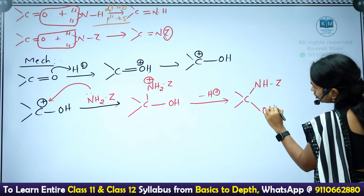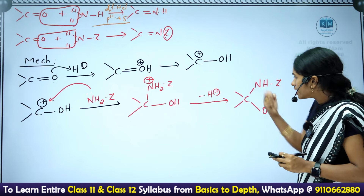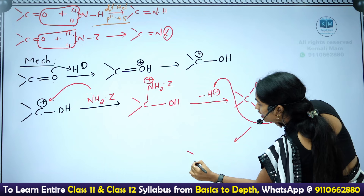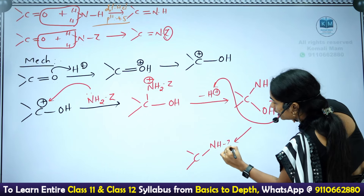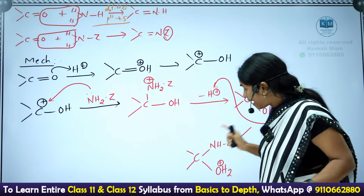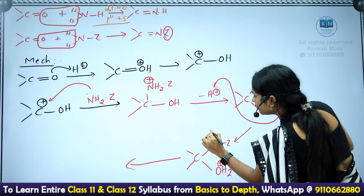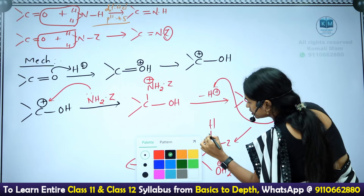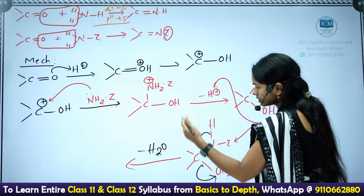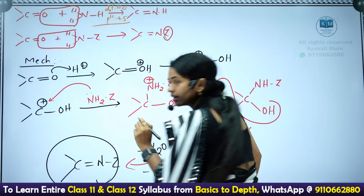The OH group then donates its lone pair to an H+, forming H2O+. The two electrons shift, water leaves as H2O, H+ is regenerated, and the final product is C=N-Z. That is the mechanism, but the simple trick remains: remove two hydrogens from ammonia and one oxygen from the carbonyl compound and write the double bond.